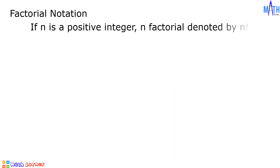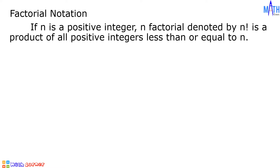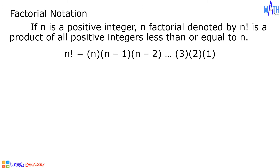If n is a positive integer, n factorial, denoted by n followed by an exclamation point, is a product of all positive integers less than or equal to n. It is defined by n factorial equals n times n minus 1 times n minus 2, up to 3 times 2 times 1.